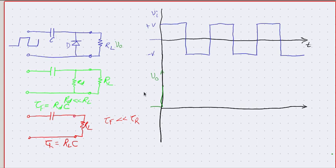Once the voltage is high, the diode is off, and we have the circuit with RL. The capacitor now starts charging slowly through the large resistance RL, so only a slow current flows. As the capacitor gradually charges, this voltage slowly reduces, and we get a slow reduction in the output.